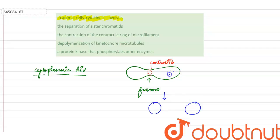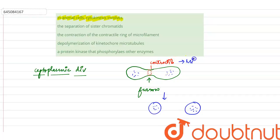Suppose there are sister chromatids here — there is separation of sister chromatids, furrow is formed, and ultimately two cells are formed. Now this contractile ring is basically formed from our microfilament.